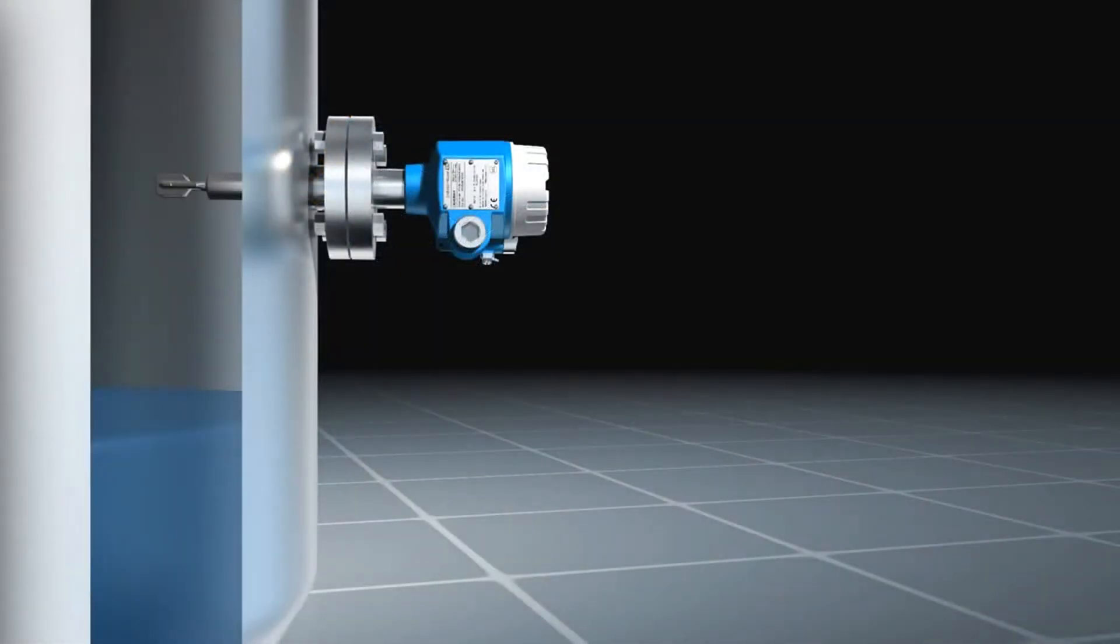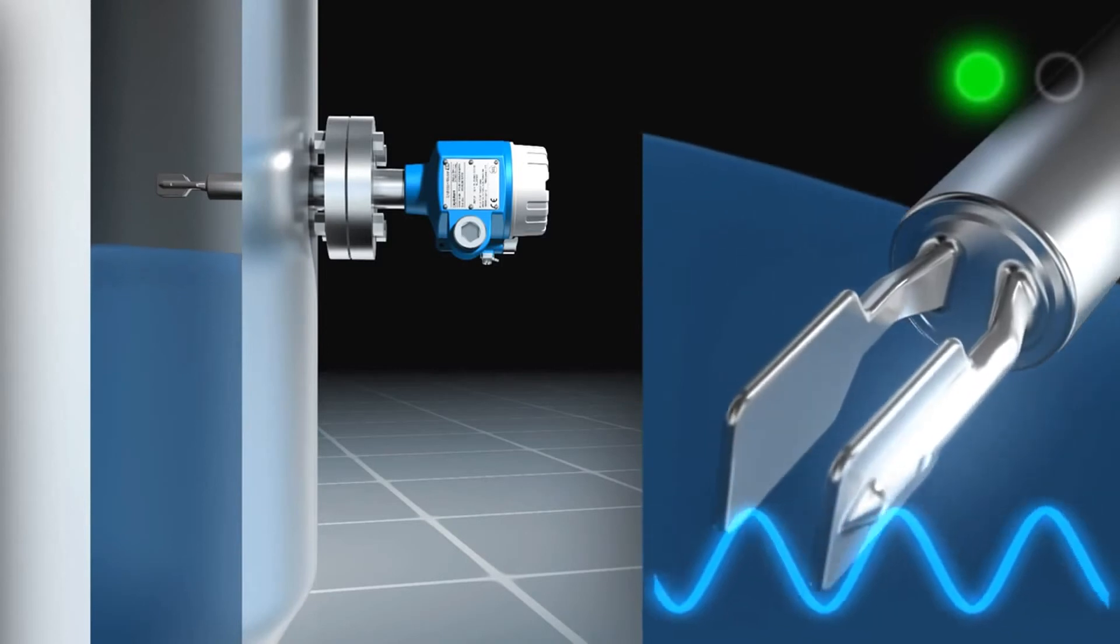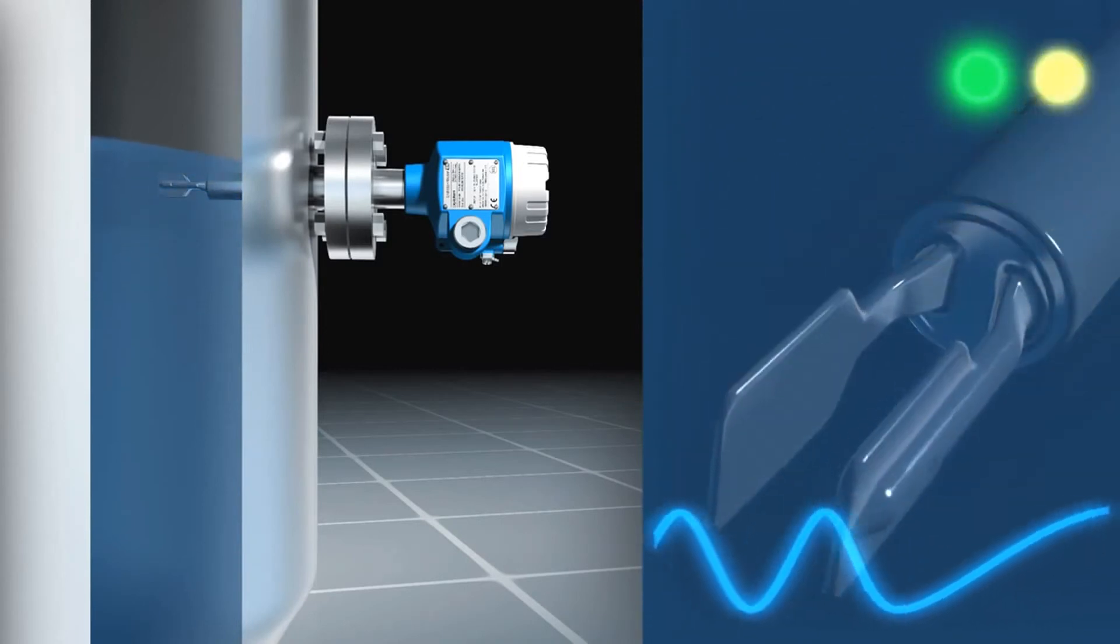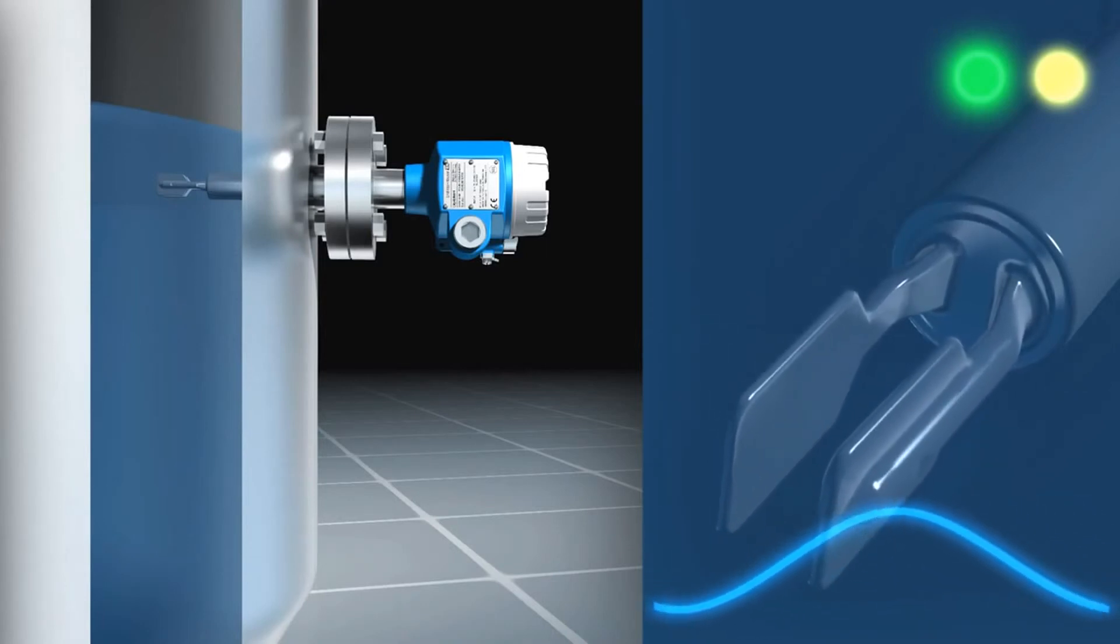As the tines of the fork are covered in a tank as the liquid rises, the resonance frequency of the tuning fork changes. The immersion into the liquid reduces the frequency. This frequency change is analyzed and converted into a switching signal.